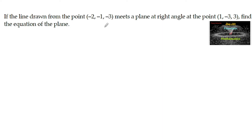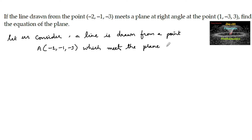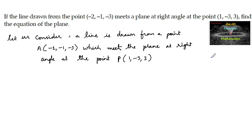If a line drawn from a point meets a plane at right angle at the point, find the equation of the plane. Let us consider a line drawn from a point A which meets the plane at right angle at the point P(1, -3, 3).